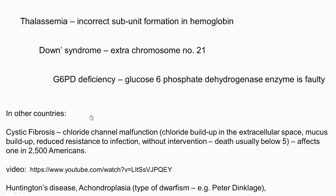In other countries, cystic fibrosis is a very common genetic disorder in the US. It arises because the chloride channel protein in cell membranes is not properly formed, so chloride cannot move in and out of the cell. This leads to chloride buildup in the extracellular space, mucus buildup, and reduced resistance to infection. Without intervention, death usually occurs before 5 years of age, though with intervention people live much longer. It affects 1 in 2,500 Americans.